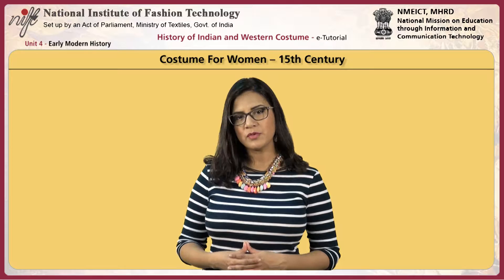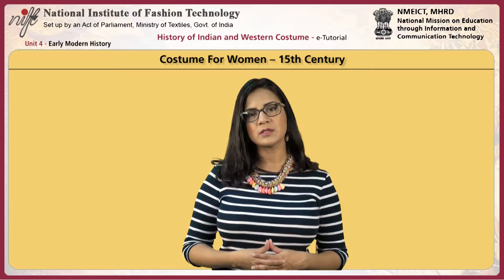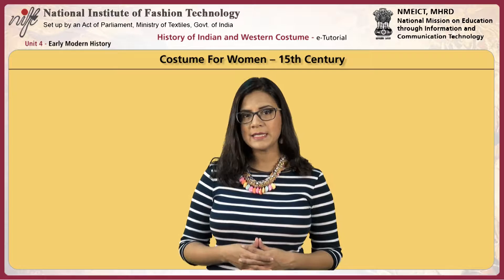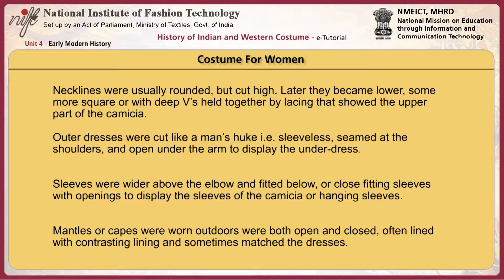Another dress style was made of a bodice joined to a full pleated or gathered skirt. These were closed by lacing up the front or at the sides. Necklines were usually rounded but cut high; later they became lower, some more square or with deep V's held together by lacing that showed the upper part of the camicia. Outer dresses were cut like a man's huque — sleeveless, seamed at the shoulders and open under the arms to display the underdress. Sleeves were wider above the elbow and fitted below, or close fitting with openings to display the sleeves of the camicia, or hanging sleeves. Mantles or capes were worn outdoors, both open and closed, often lined with contrasting lining and sometimes matched the dresses.